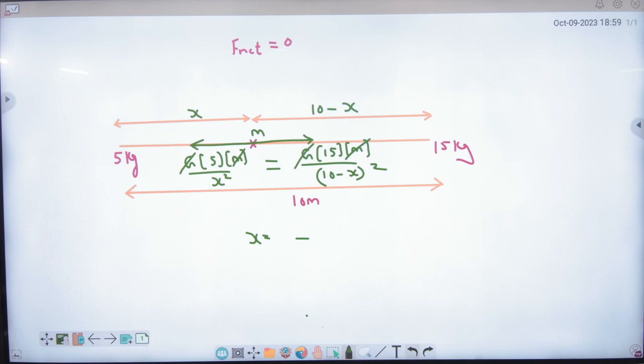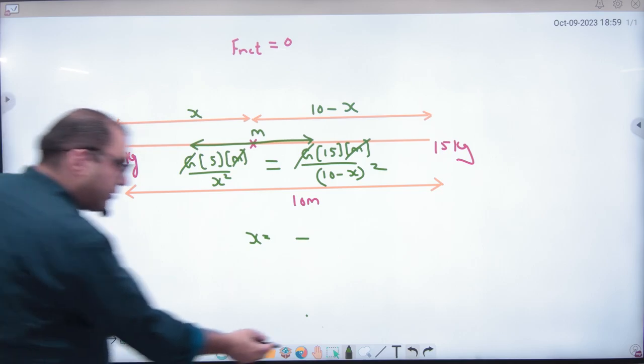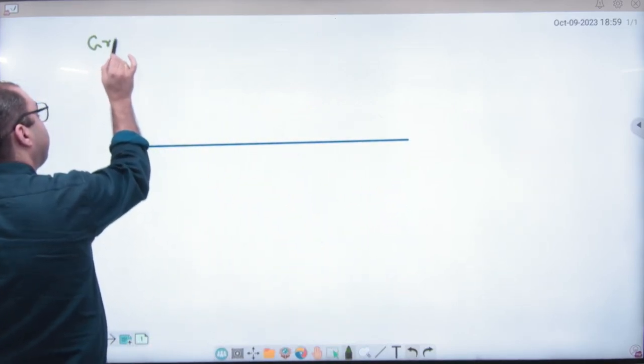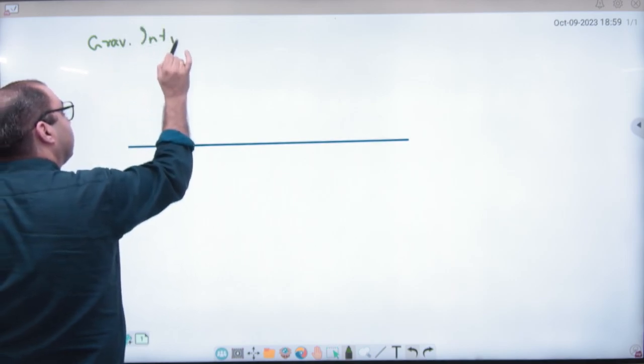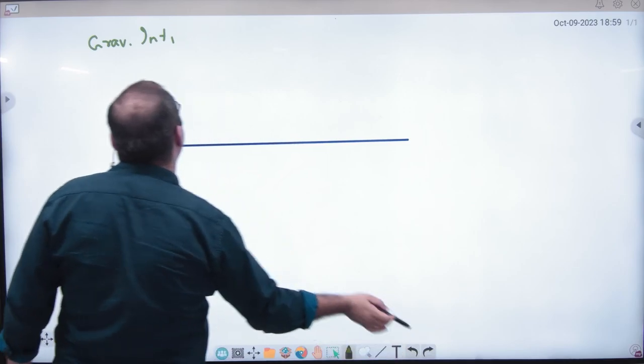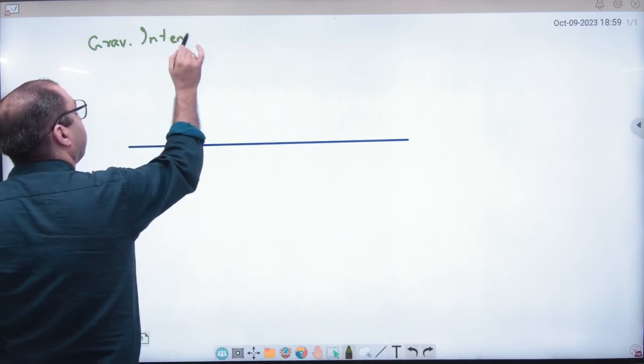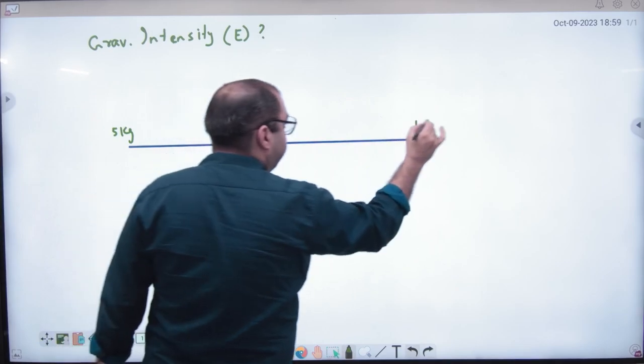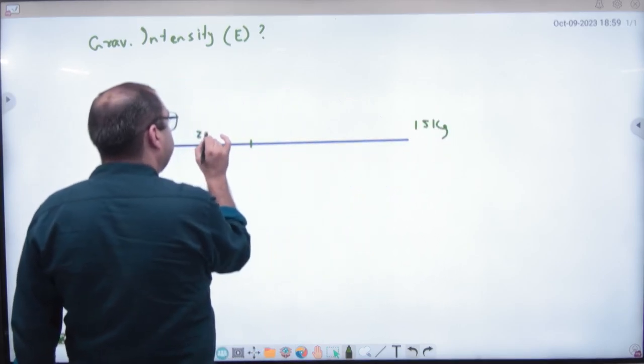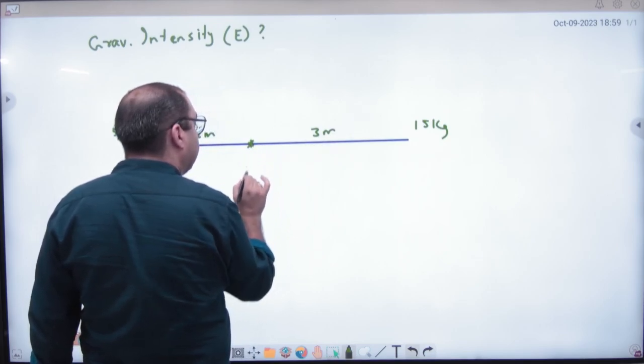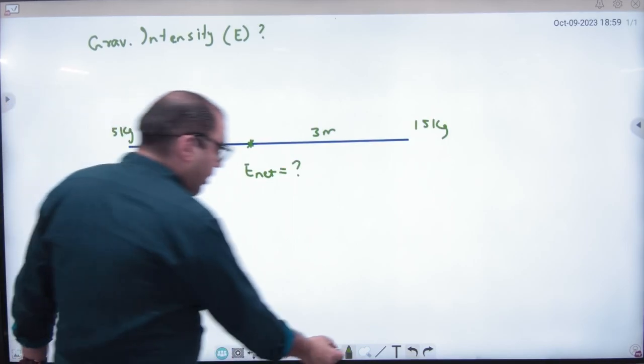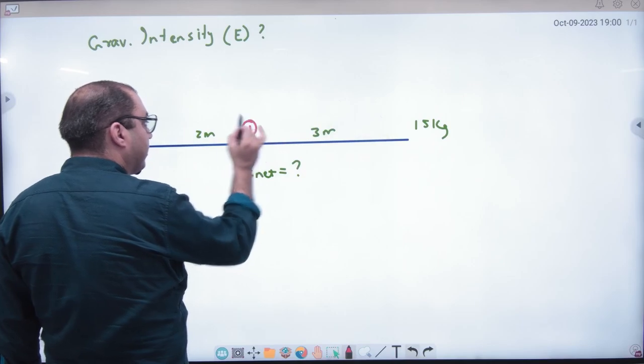Now, the third example which will come, the next category of question, E, intensity. In intensity, exactly the same concept will come as we did for force. So here, example gravitational intensity or field strength, we're talking about E. Its symbol is e. Just like this is 5 kg, like this is 15 kg, and assume this is 2 meter, assume this is 3 meter. I have to calculate here, at this point, what is the value of E. Where I have to find E, there mass should be assumed as one. This is always the case.